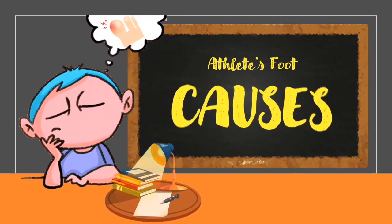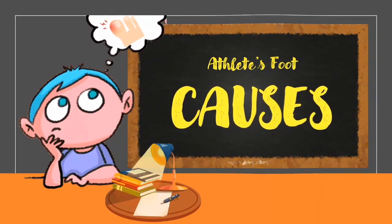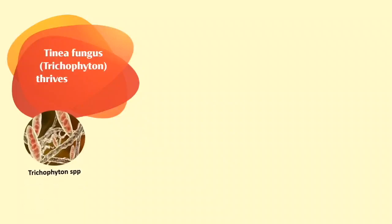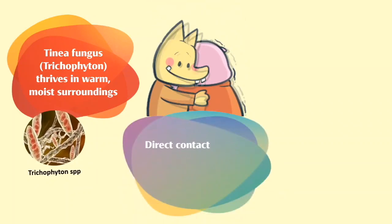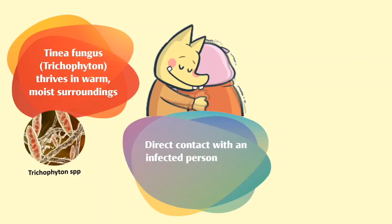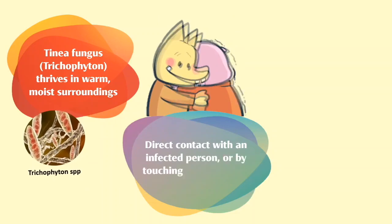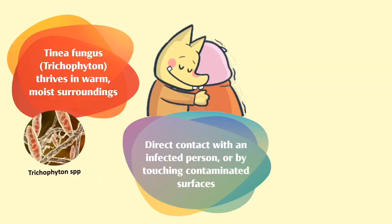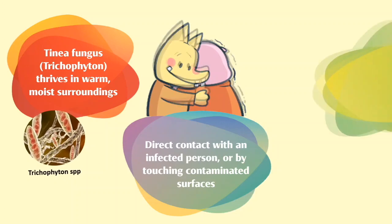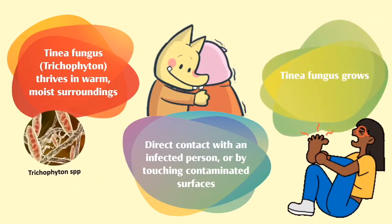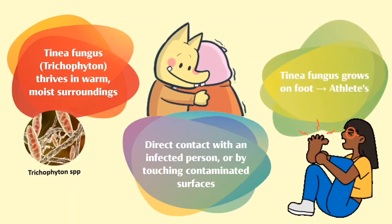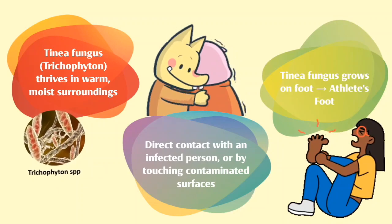Causes. Athlete's foot is caused by the tinea fungus, trichophyton, which thrives in warm and moist surroundings. A person may get the infection via direct contact with an infected person or by touching contaminated surfaces. As the tinea fungus grows on the foot, the person will get the infection known as athlete's foot.